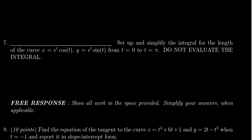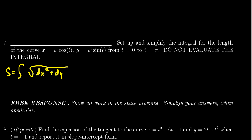We're looking for arc length, so we're going to use our standard arc length formula — the integral of ds. In this situation, because we have a parametric function, we can adapt it. The general formula is you take the square root of dx squared plus dy squared, which, as we modify this into parametric form, means we're going to take the derivative of x: e to the t cosine t.